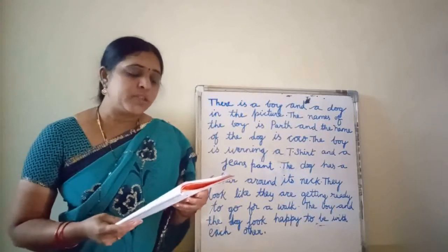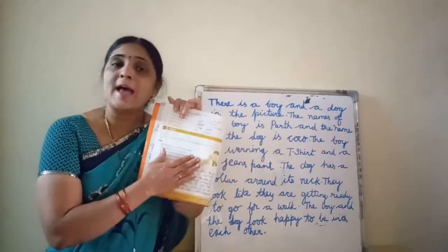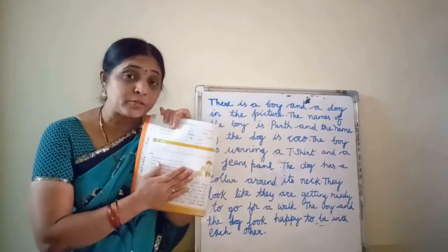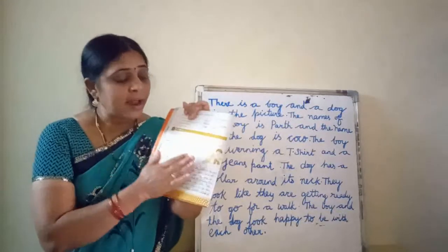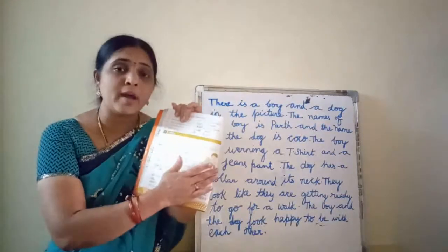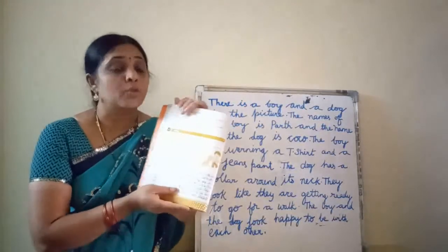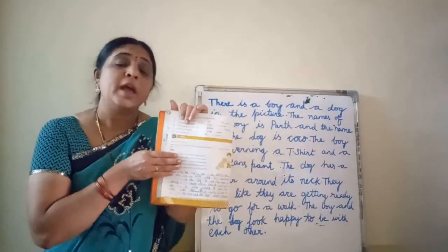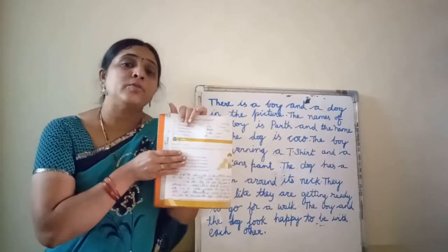Use the given things. Here a picture has been given. So what you have to do? You have to write about these two — this boy and dog. Here some questions are being given. According to the questions, you have to answer.